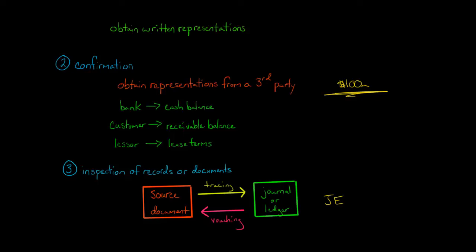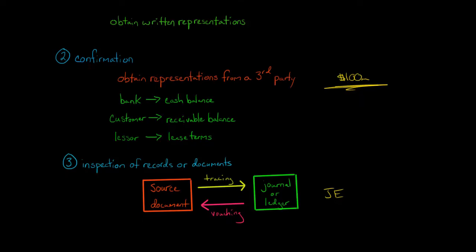With vouching, you're going the other way, where you've got a journal entry and you're asking, was there in fact really a sale? Did the sale occur? So you're testing existence and occurrence.